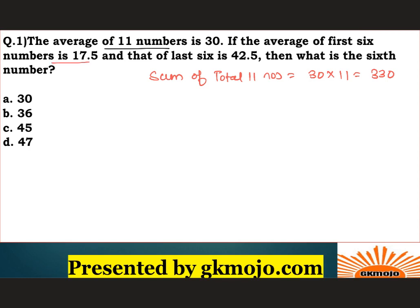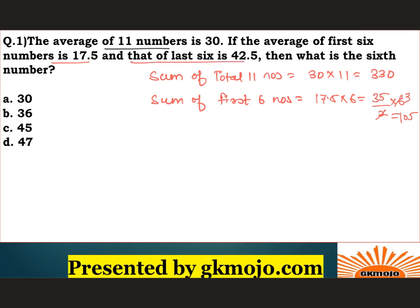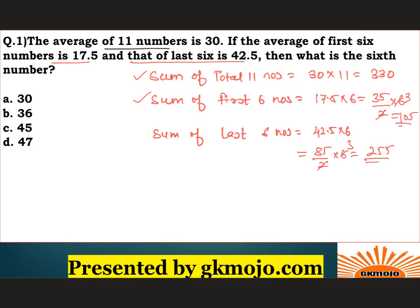If the average of the first 6 numbers is 17.5, then the sum of the first 6 numbers would be 17.5 into 6, which is 35/2 into 6, coming down to 105. The sum of the last 6 numbers is 42.5 into 6, which is 85/2 into 6, equals 255.